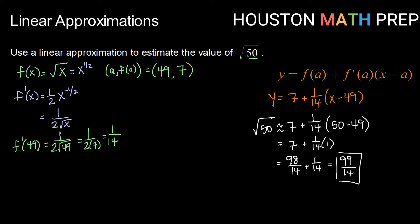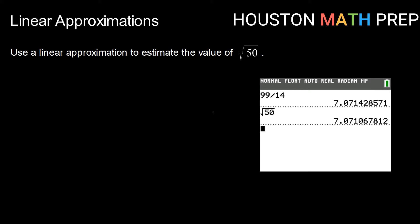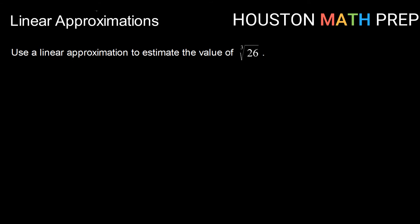So our tangent line approximation for √50 is 99/14. You might wonder what that actually is — 99/14 is approximately 7.0714. And for comparison, the true value of √50 is 7.07106 and so on. Our approximation gave us something slightly over 7 as expected, and it isn't until the fourth decimal place that we even see a difference. Let's see one more example to be sure we've got it.